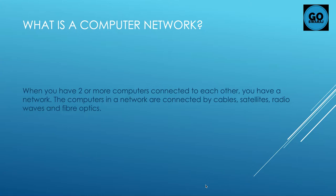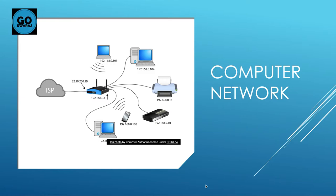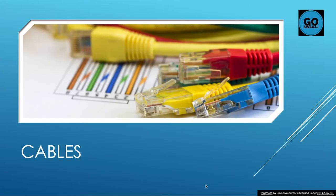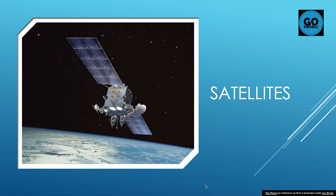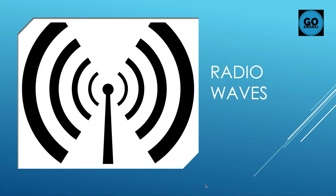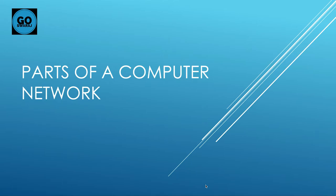The computers in a network are connected by cables, satellites, radio waves, and fiber optics. Here are pictures of cables, satellites, fiber optics, and radio waves — the parts of a computer network.